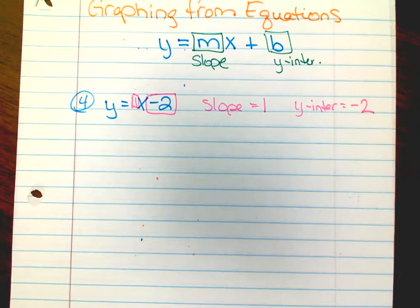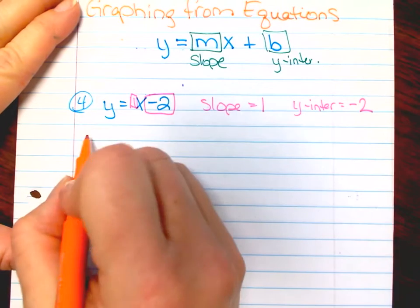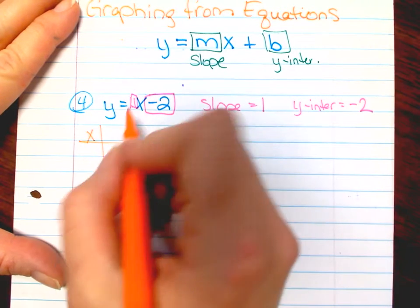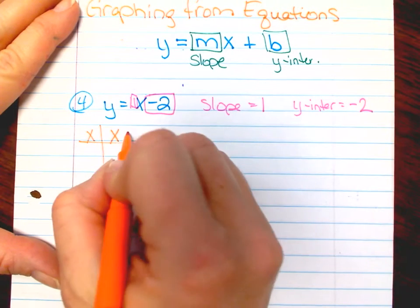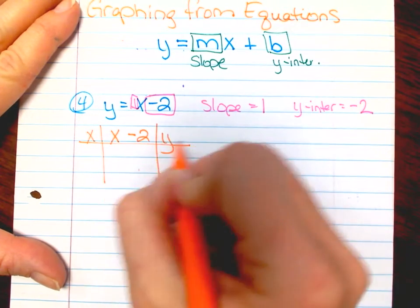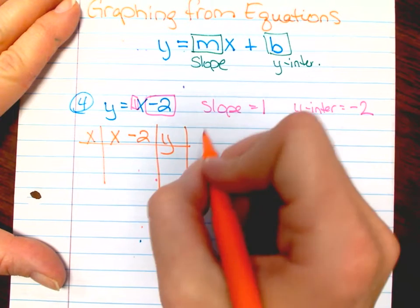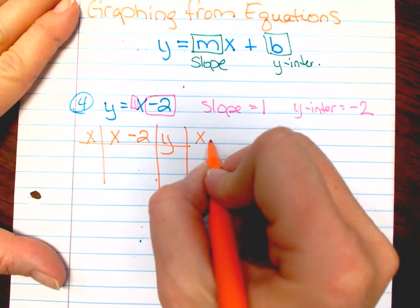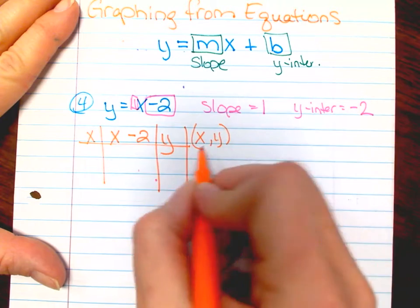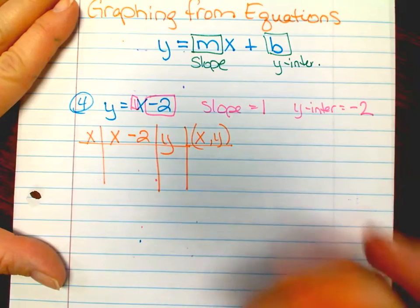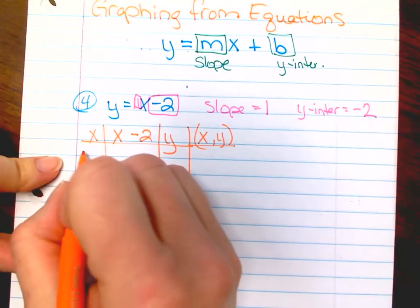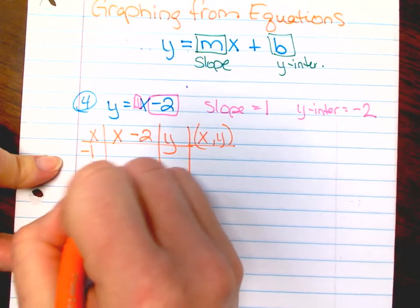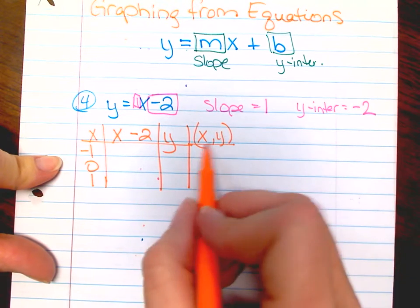But you have to graph it. I've reminded y'all to make your table chart out to help graph it. It's better to plot them out than to guess in your head. If you mess up, we don't know where you messed up. So let's do negative one, zero, one — those are my favorites.